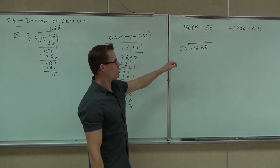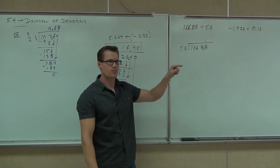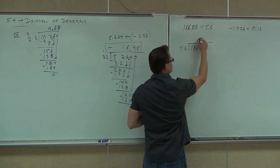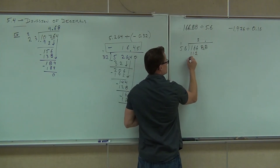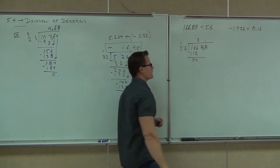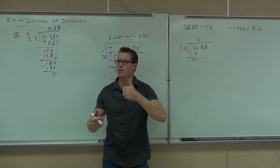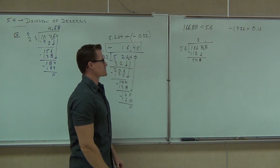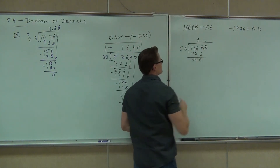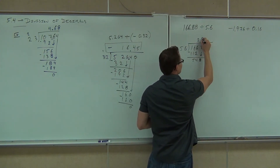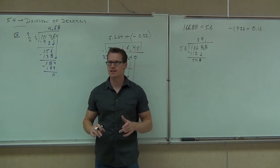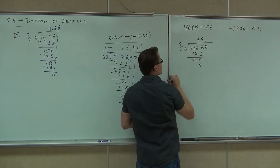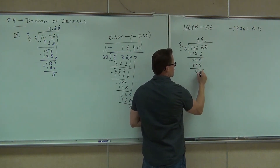When we divide, 56 into 166 — probably 2 times. So 2 times, we'll get 12, we'll get 11. If we subtract, we're going to get 54. If the remainder is less than the divisor, you know you did it right. We'll bring down the 8 — I'm going to guess 9 times. If I did 10 it'd be 560, that would be too much, so I'll do 9 — that gives us 504. We'll bring down that 8. It's going to go in 8 times, giving us 448. We're going to get 44 plus 4 is 44. Subtracting, we get 0. Our answer is 29.8.